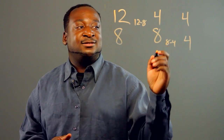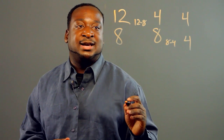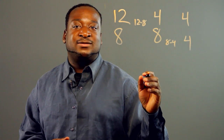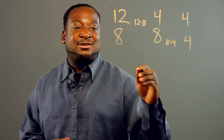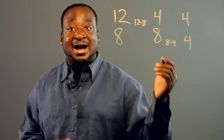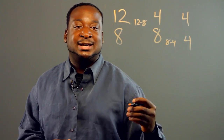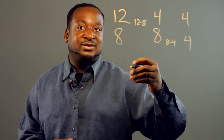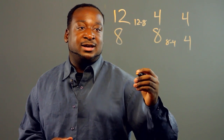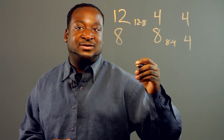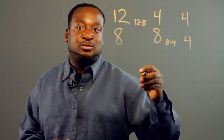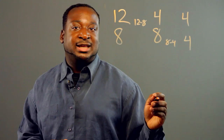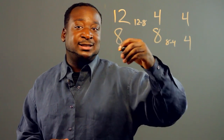Now the reason this works is because when you think of the greatest common factor, it's a number that divides evenly. So when the number divides evenly, we know that division is multiple subtractions, so it subtracts evenly.